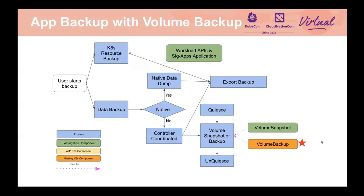Looking at the diagram: volume backup is next to volume snapshot, placed in an orange box to indicate it is a missing Kubernetes component. We have started discussions about it, but there is no concrete design yet.